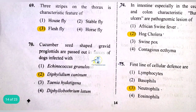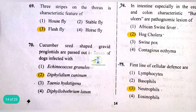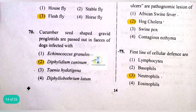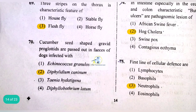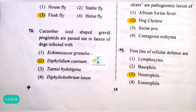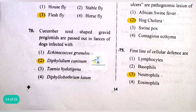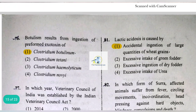Characteristic button ulcers are a pathognomonic lesion of hog cholera, also called classical swine fever. Hog cholera, African swine fever, and classical swine fever are different diseases. The first line of cellular defense is neutrophils. Botulism results from ingestion of preformed exotoxin of Clostridium botulinum.